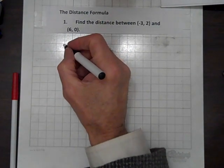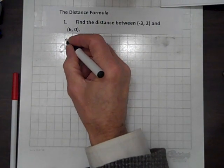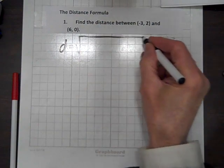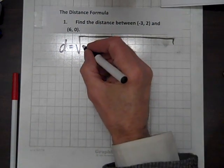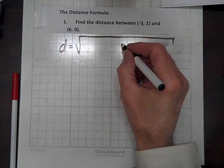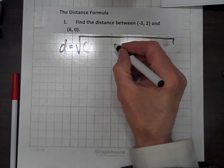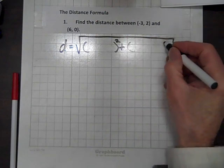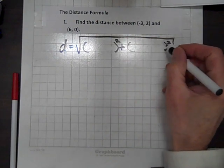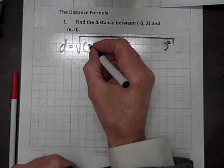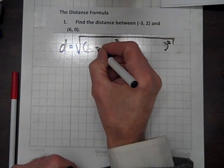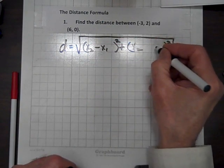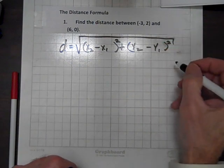To review, the distance formula equals the square root of, in parentheses, x sub two minus x sub one, squared, plus, in parentheses, y sub two minus y sub one, squared.